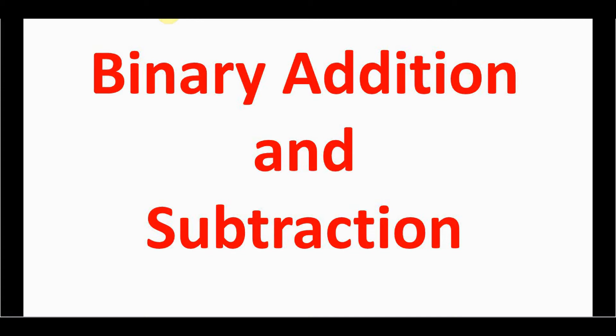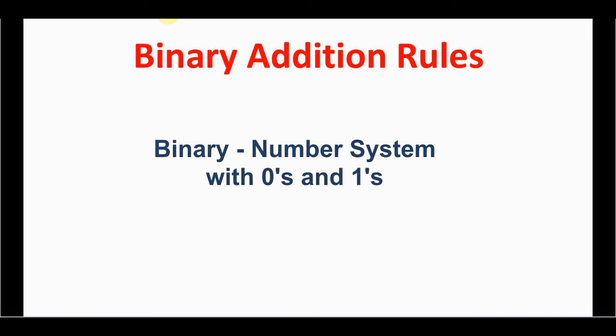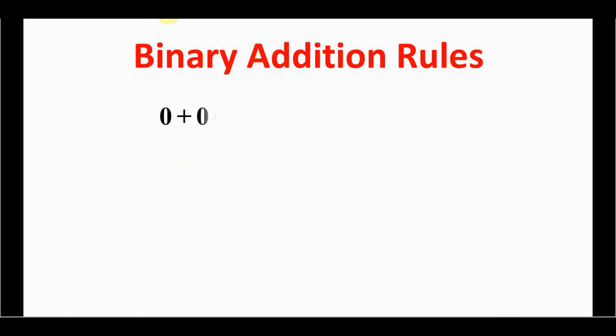Welcome back to Trinity Software. In this video, let's see how to add and subtract binary numbers with examples. Let's start with the rules for binary addition. Binary is a number system where numbers contain only zeros and ones. The first rule is: zero plus zero equals zero, one plus zero equals one, and zero plus one equals one.